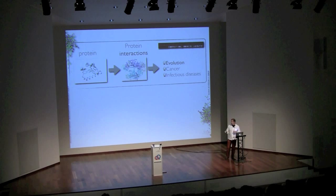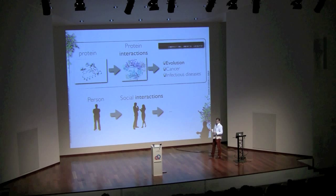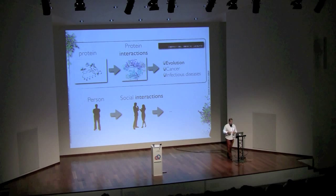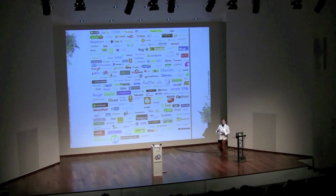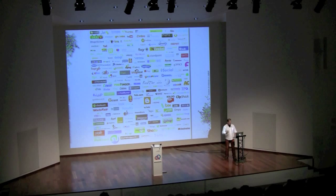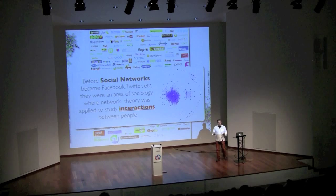I'm going to use examples from social interactions. You all understand that a person has intrinsic properties that are different from the properties that manifest themselves through social interactions. The way we study this is by using social networks. Before social networks became equated with Facebook and all that, social networks was a term used in sociology where graph theory and network theory were used to understand how interactions between people arise and evolve over time. This is very much what I do at the molecular level.